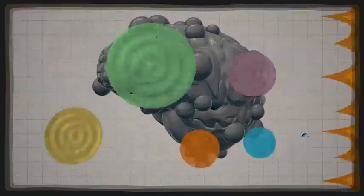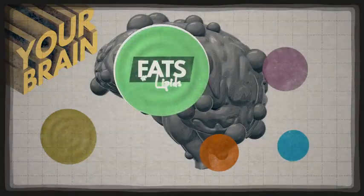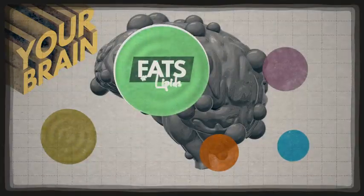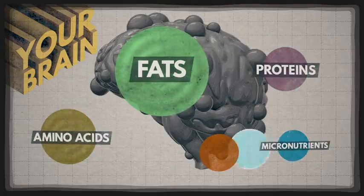Most of the weight of your dehydrated brain would come from fats, also known as lipids. In the remaining brain matter, you would find proteins and amino acids, traces of micronutrients, and glucose.